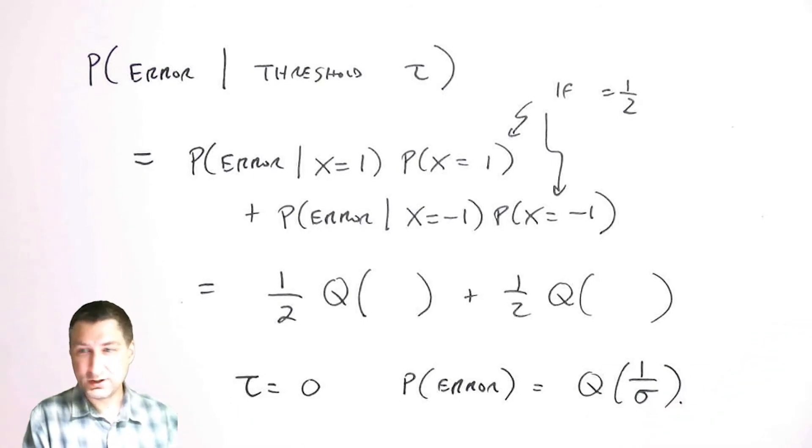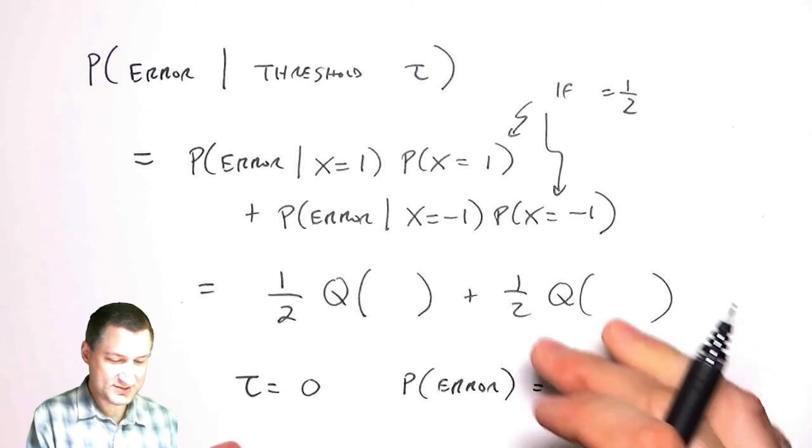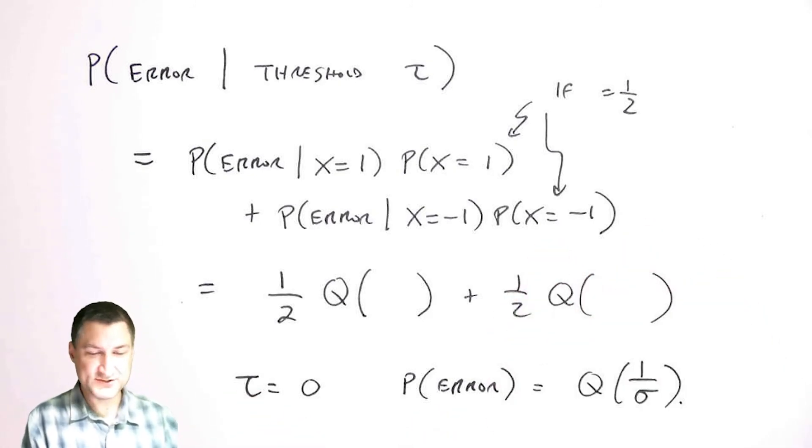But what can sometimes happen is that these two probabilities are not equal to each other. So let me just spend the next lesson, instead of making this one longer, talking about the idea behind what's called the Bayes decision rule. That's really important in machine learning.